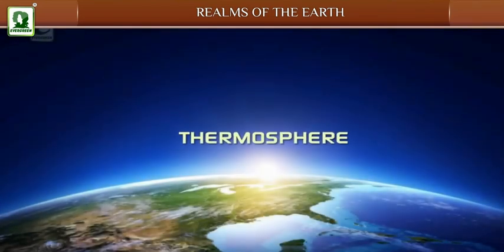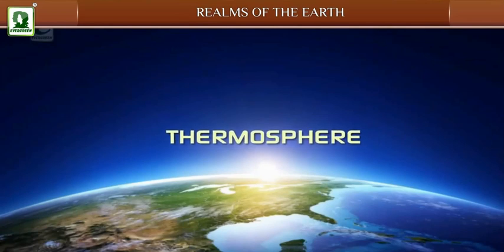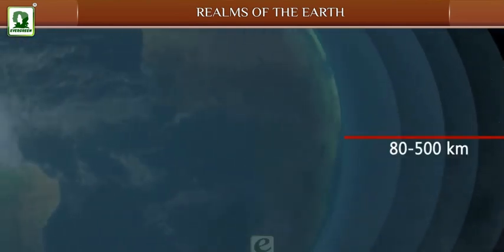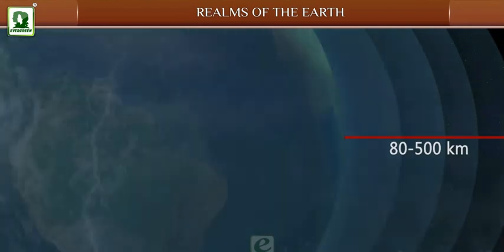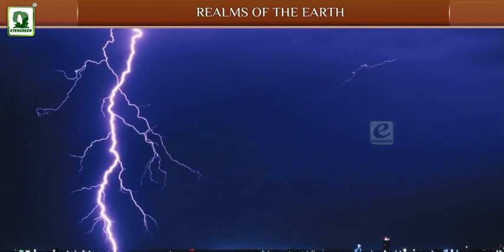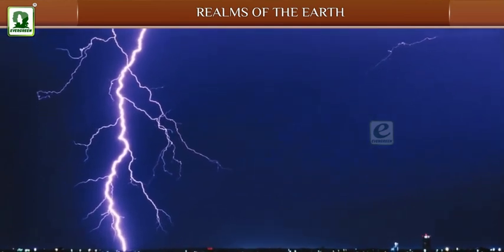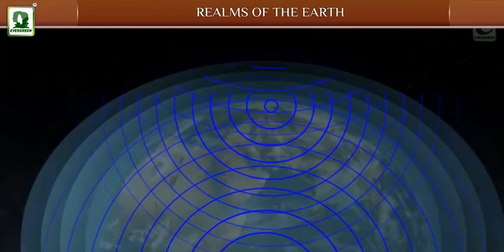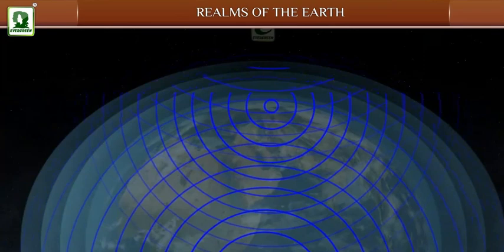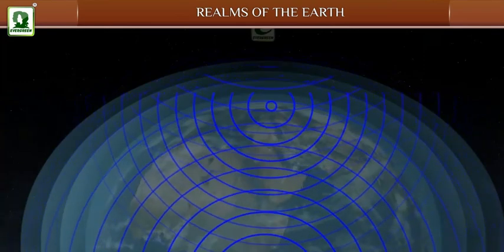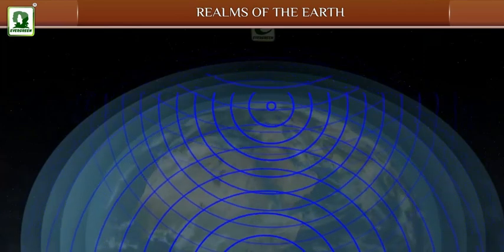Thermosphere: It stretches from 80 to 500 kilometers above the surface of the earth. This layer contains electrically charged particles at the lower level. This layer, known as the ionosphere, transmits radio waves back to the earth. It is extremely hot in this layer.